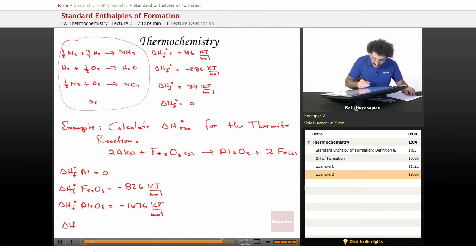And the delta H of formation for iron, well, iron is an element, zero. Good.